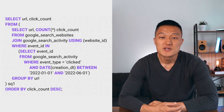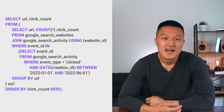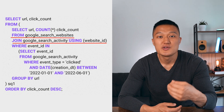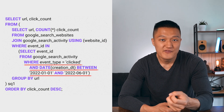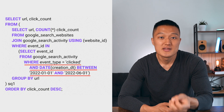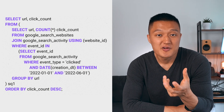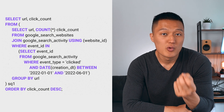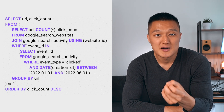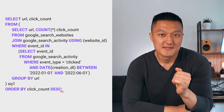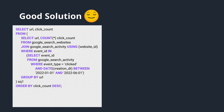The solution from the good response looks like this: I used joins to merge the website and activities table using website ID, then filtered the table by date and event type. Then using GROUP BY, I aggregated the filtered table by counting the number of rows per URL, then ordered the output by descending click count.